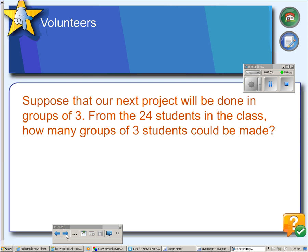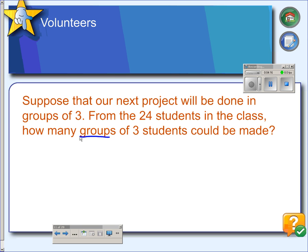Suppose that our next project in Algebra 2 is going to be a project done in groups of 3. From the 24 students in the class, how many groups of 3 students could be made? Since we're talking about groups here, we're talking about a combination instead of a permutation. So we do 24C3. And that comes out to 2,024.